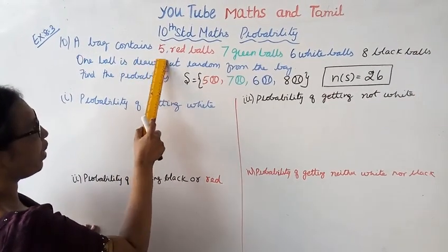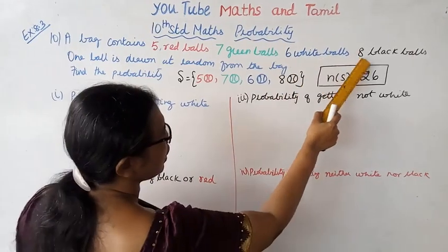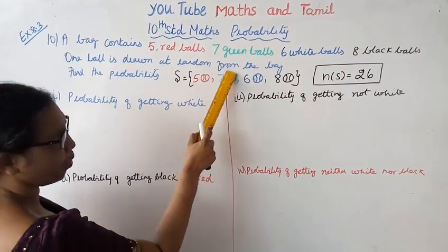A bag contains 5 red balls, 7 green balls, 6 white balls, 8 black balls.